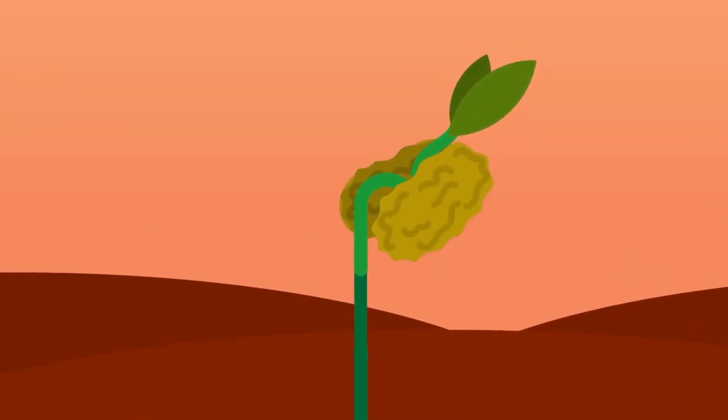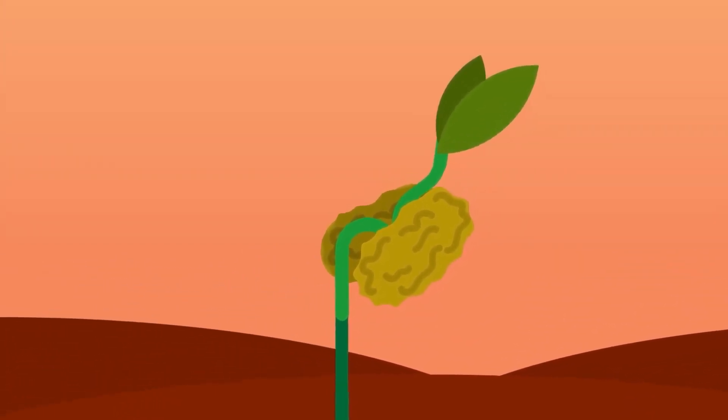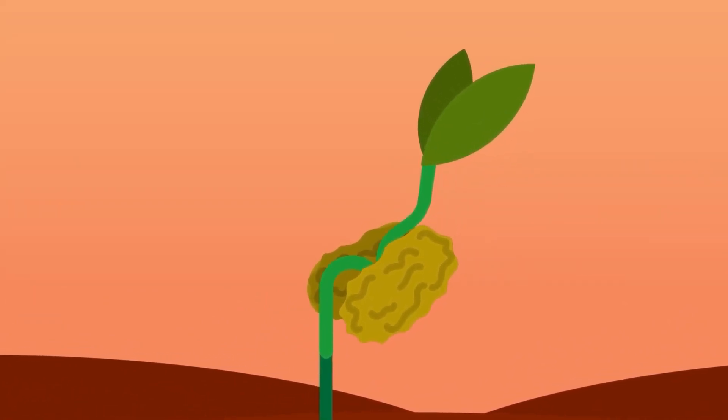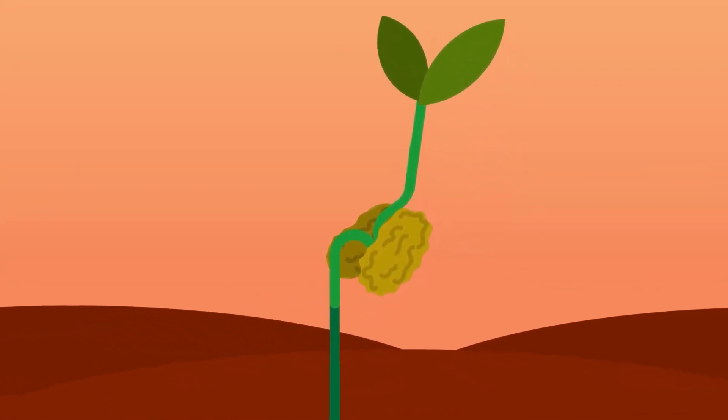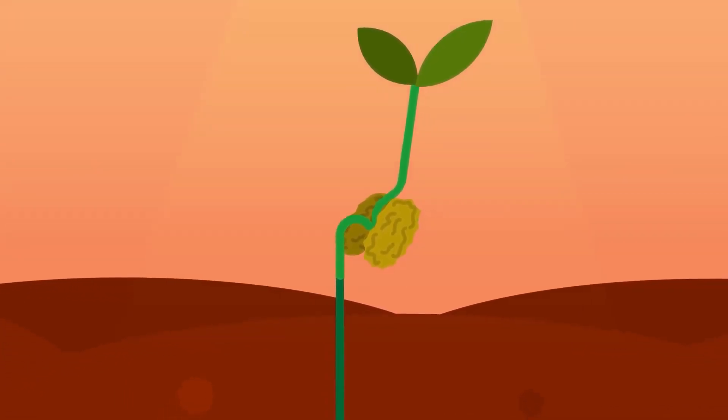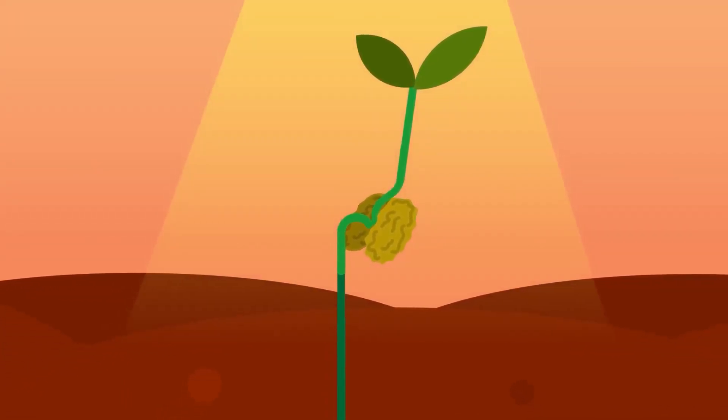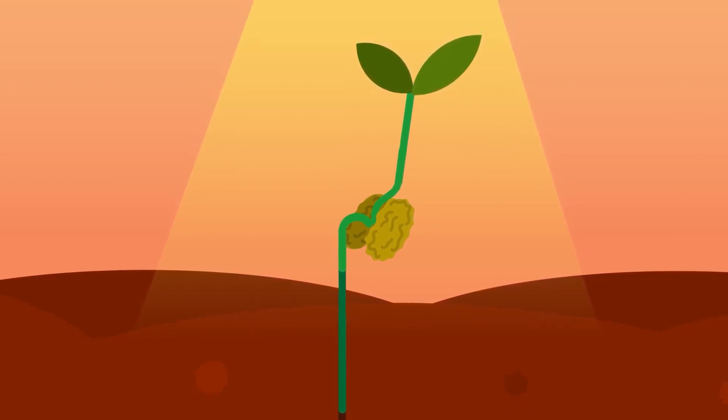Soon, the stem straightens, the cotyledons turn green and spread out, exposing the first leaves with the bud between them. This bud will grow into the future shoot. The foliage leaves expand, turn green and carry out photosynthesis. This seedling is now a self-supporting plant.